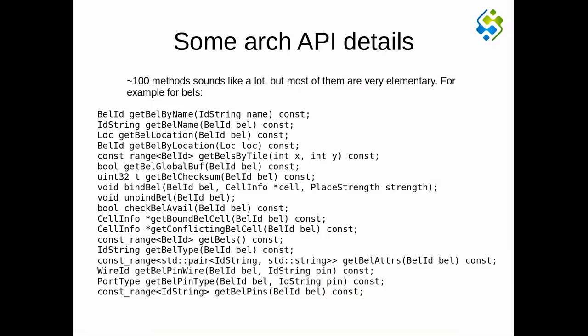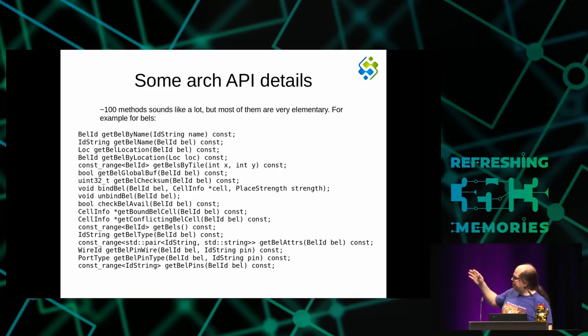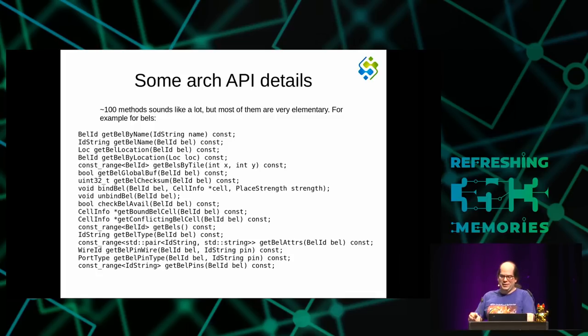Implementing about 100 methods sounds like a lot, but those methods are very basic. In many cases you have an in-memory representation of the architecture database, and each function is maybe two or three lines of C++ code doing a little pointer arithmetic to look up the right thing. There is no single get_bel_info function that returns everything — instead, for each attribute you might be interested in, there is a separate getter method. That's why there are many methods, but each is relatively simple.